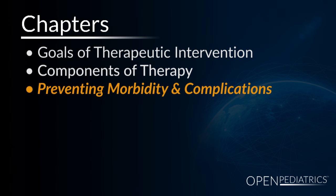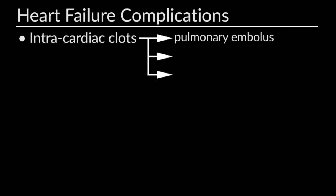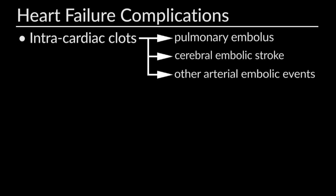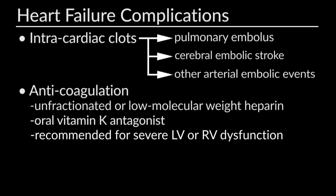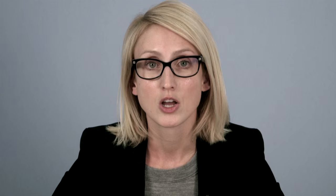Moving on to preventing morbidity and complications: intracardiac clots can form in the setting of severe RV or LV dysfunction, leading to pulmonary embolus, cerebral embolic strokes, or other arterial embolic events. We suggest anticoagulation — unfractionated or low molecular weight heparin, or an oral vitamin K antagonist — for severe RV or LV dysfunction, and antiplatelet agents such as aspirin for mild to moderate dysfunction. Many adult studies demonstrate that an LV ejection fraction less than 30% should be treated with anticoagulation to prevent intracardiac thrombi formation.